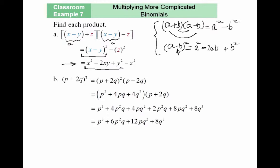The next one: p plus 2q to the power of 3. I can write this as p plus 2q squared times p plus 2q to the first power — adding the exponents. Using the property to expand p plus 2q squared first: first term squared is p squared, second term squared is 4q squared, and the middle term 2ab gives 2 times p times 2q, which is 4pq.